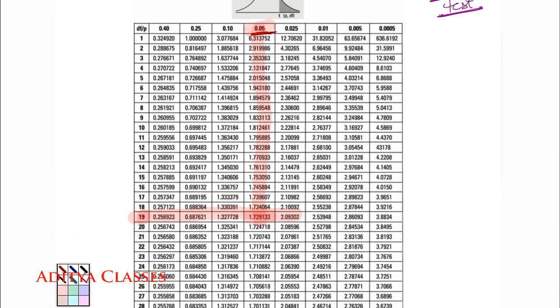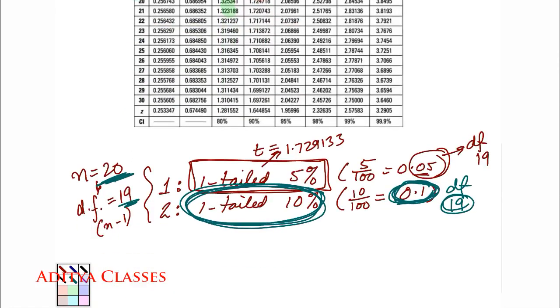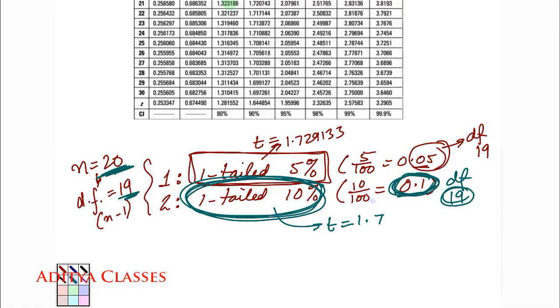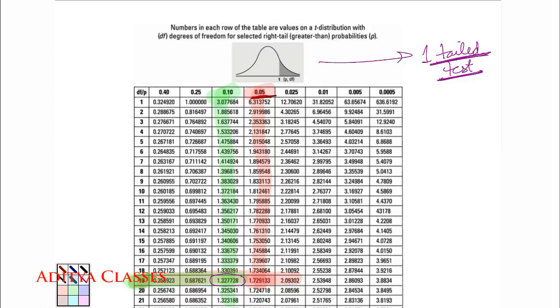Where is 0.1, remember this is 0.01, I need to check 0.1, this is 0.1. And where is 19, this is 19. So this is 0.1, this is 19. And my desired value is this one, 1.3277. T value becomes 1.3277. This is how we check t-table for one-tailed tests.